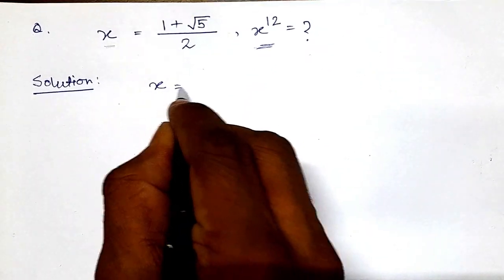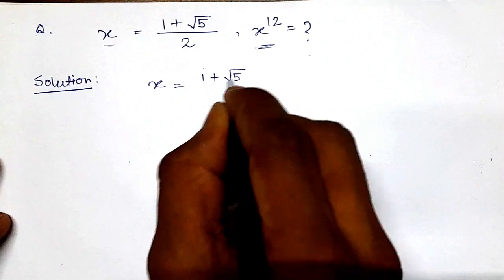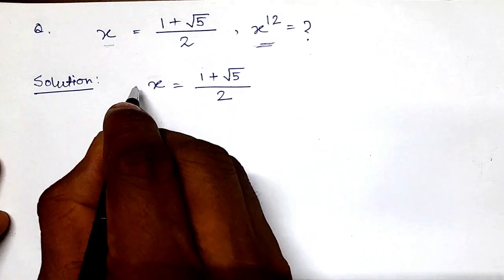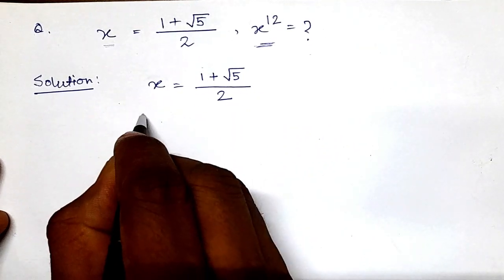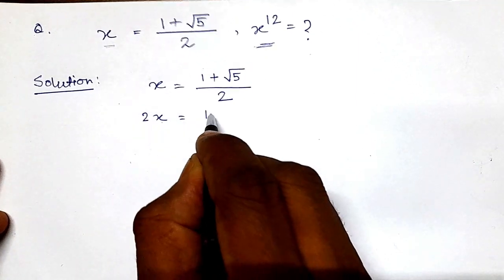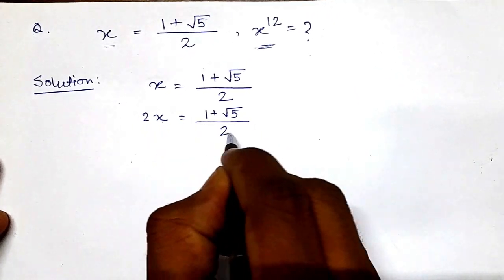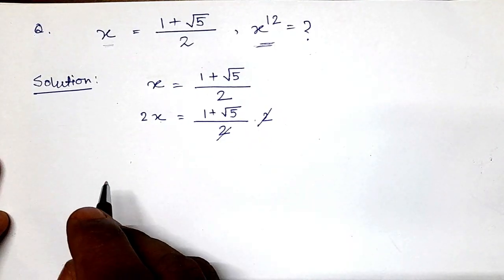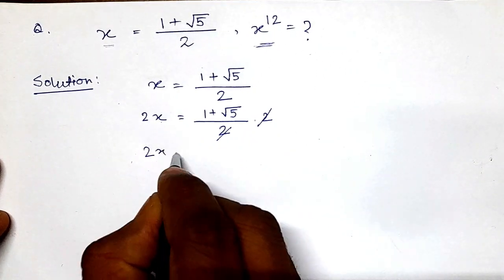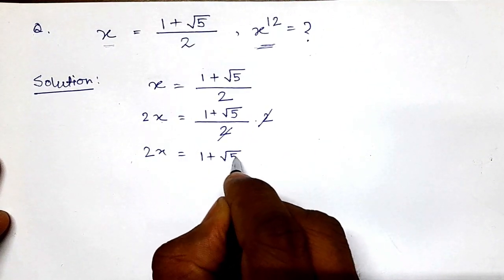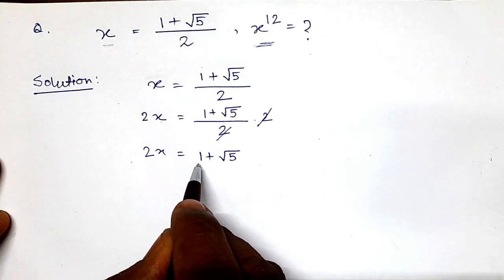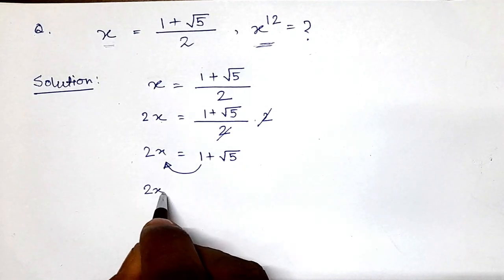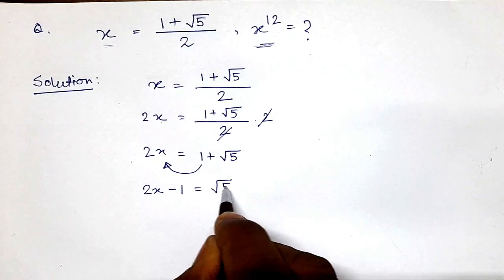We have x equals 1 plus root of 5 divided by 2. Let us first multiply both sides by 2. So here it will be 2x, and this 2 and that 2 cancel out, giving us 2x equals 1 plus root of 5. Now taking this 1 to the other side, we get 2x minus 1 equals root of 5.